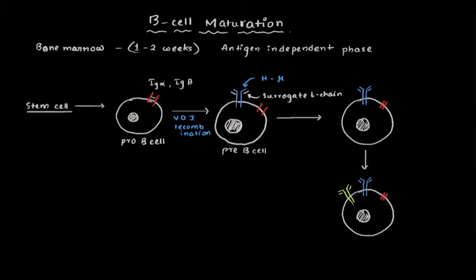This whole process, this V-D-J recombination, is accompanied or catalyzed by two enzymes which are called RAG1 and RAG2. So this catalyzes the rearrangement of the heavy chain.